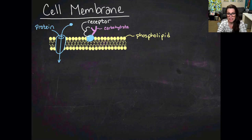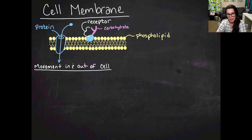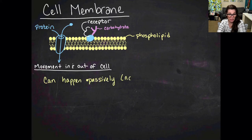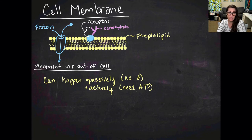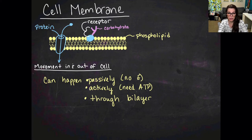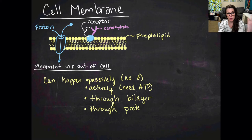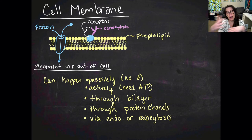We're going to talk about movement into and out of the cell. There are different ways this can happen: passively, which doesn't require any energy, or actively, requiring the expenditure of ATP. It can happen through the phospholipid bilayer directly — certain molecules can pass straight through the fatty acid layer — or through protein channels, or through endocytosis and exocytosis.